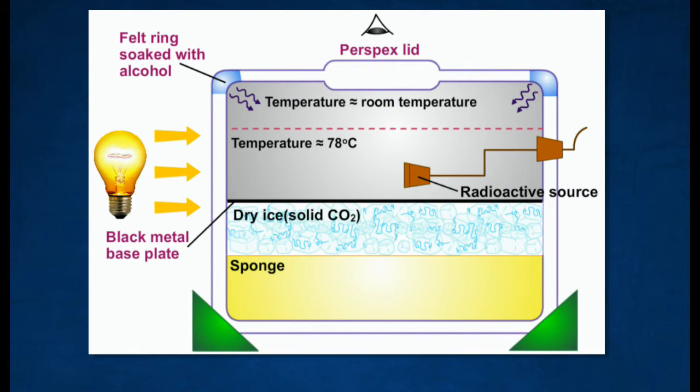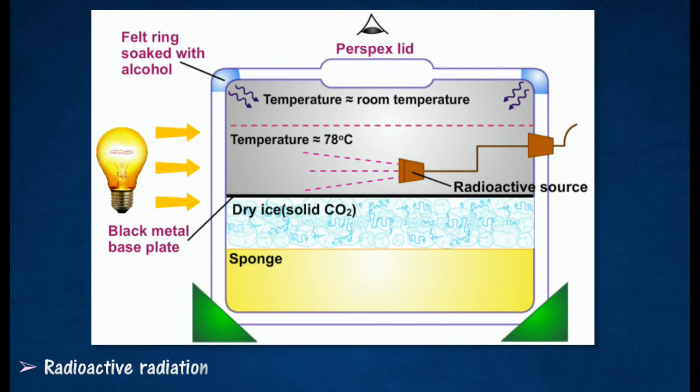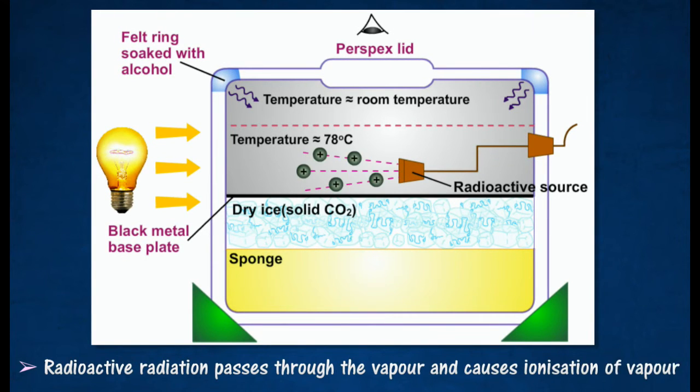Alcohol in the felt ring is vaporized and cooled by dry ice at about -78 degrees Celsius to become supersaturated. Radioactive radiation passes through the vapor and causes ionization of the vapor.